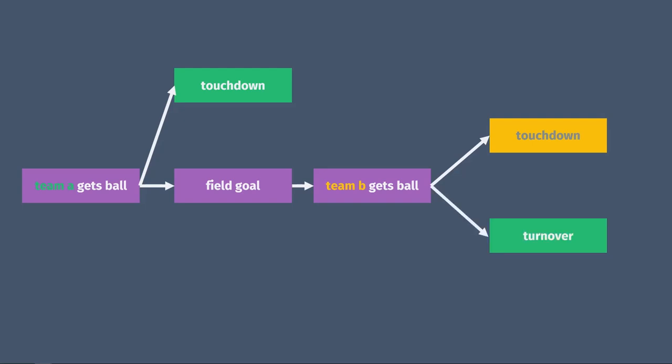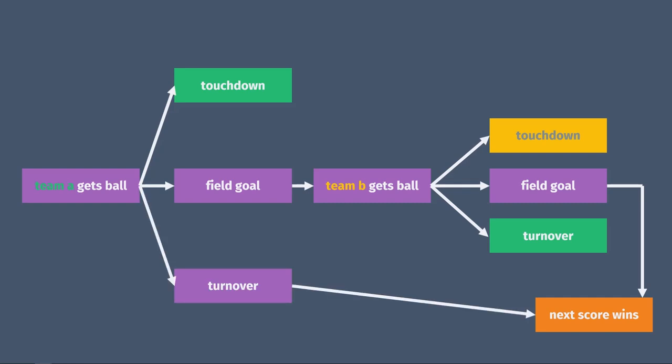If the second team kicks a field goal and they tie the game, then the game keeps going and the next team that scores will win. If the team that receives the opening kickoff turns the ball over before scoring either on downs or with an interception or fumble, the other team will get the ball and the next team to score will win.